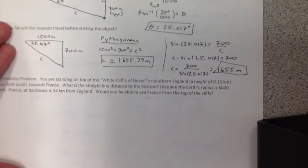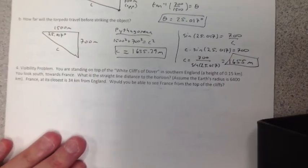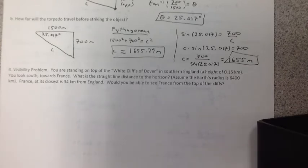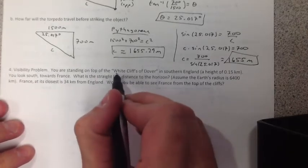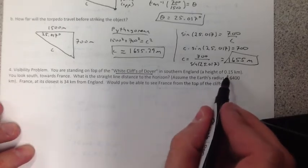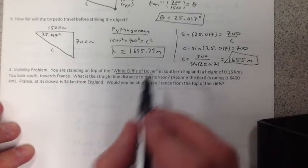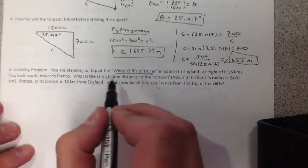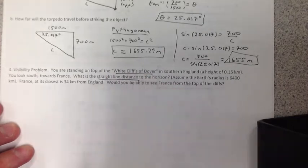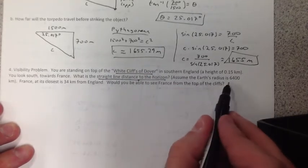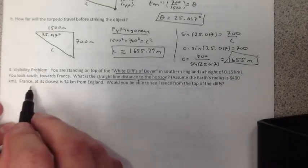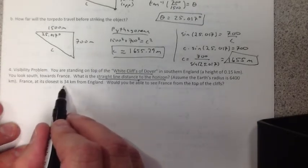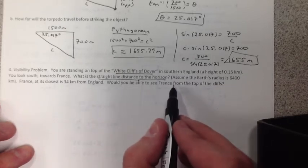Now, the last problem is one of my favorite problems. If you've ever stood on a beach and you want to see how far is it to the horizon, that's what this question helps you. It's called the visibility problem. So we're standing on the White Cliffs of Dover in southern England at a height of 0.15 kilometers. You're looking south towards France, and we want to know what is the straight line distance to the horizon. Assuming that the Earth's radius is 6,400 kilometers, and France at its closest is 34 kilometers, would we see France?